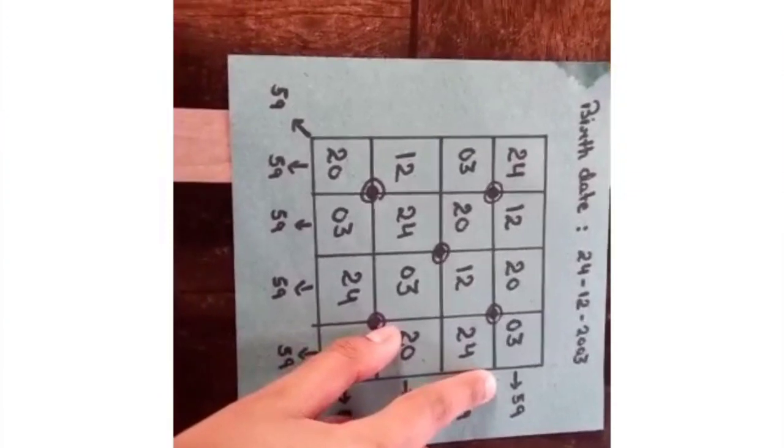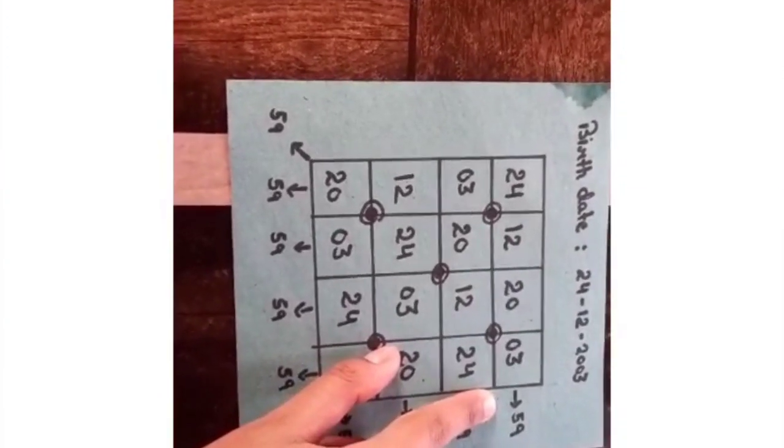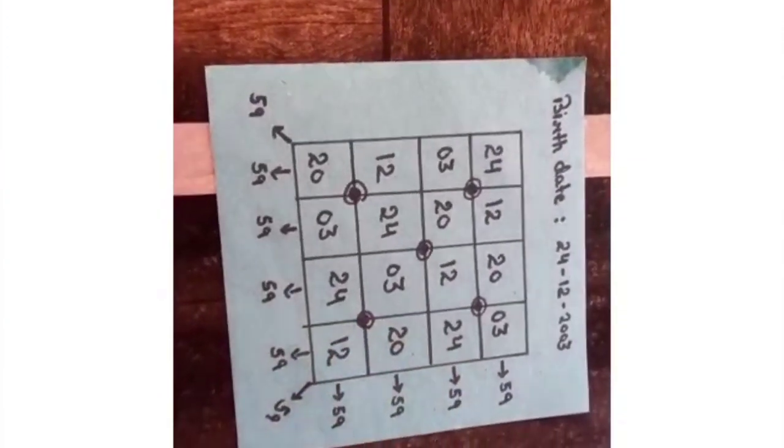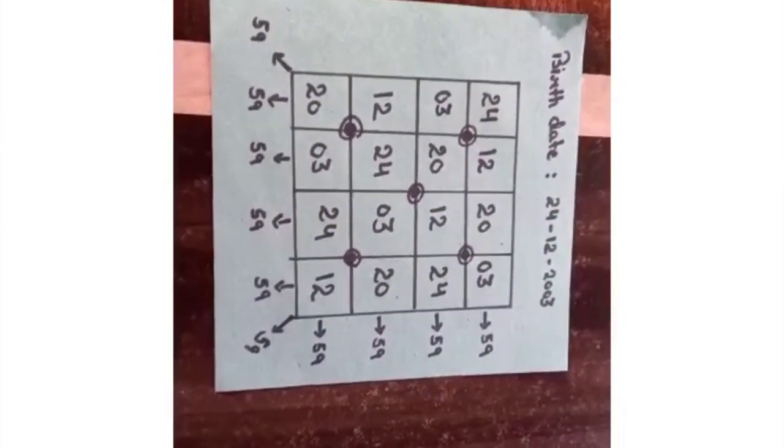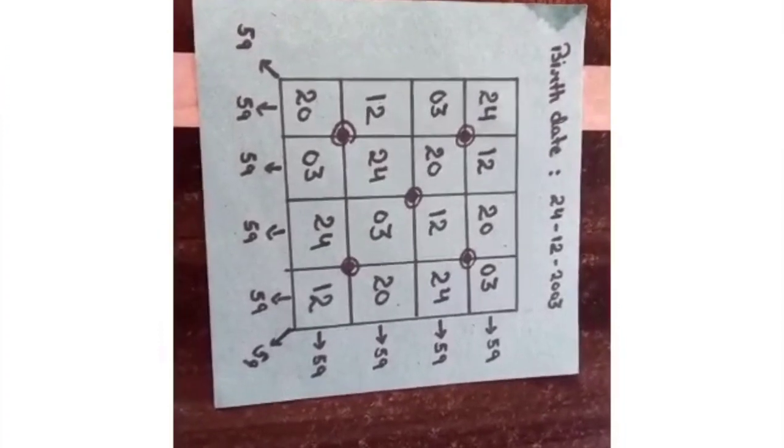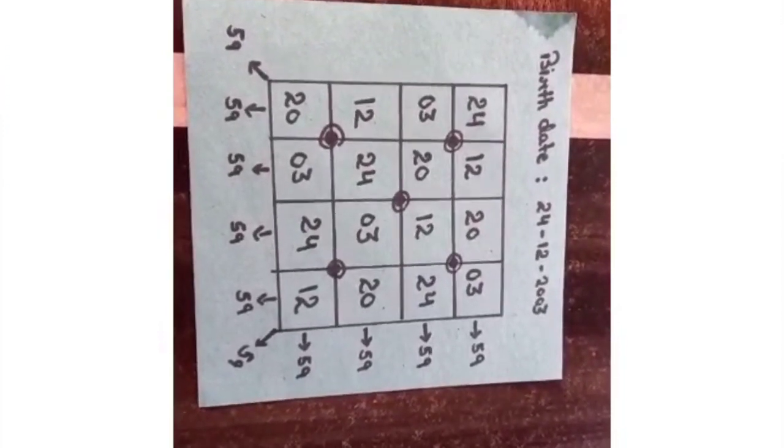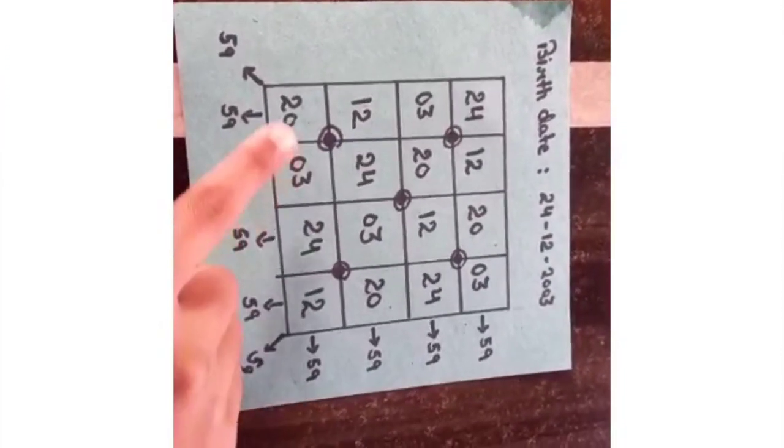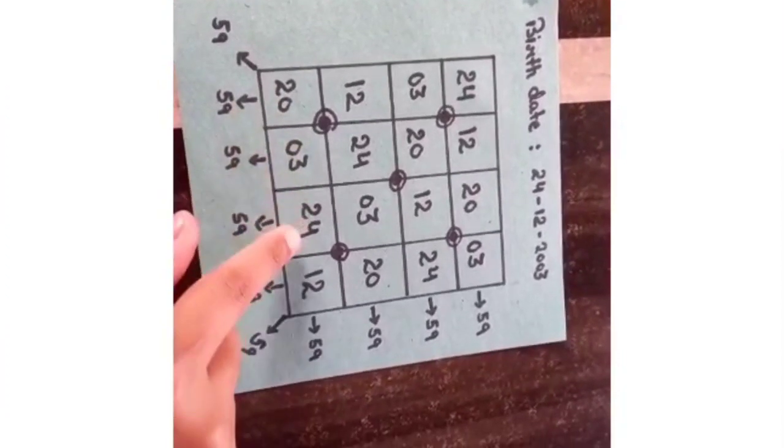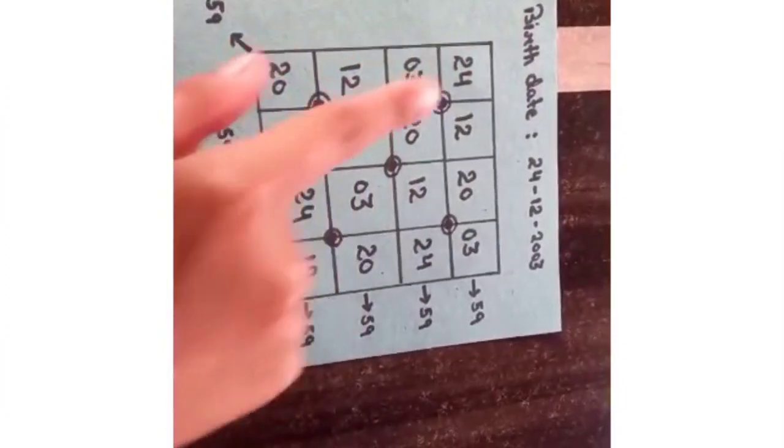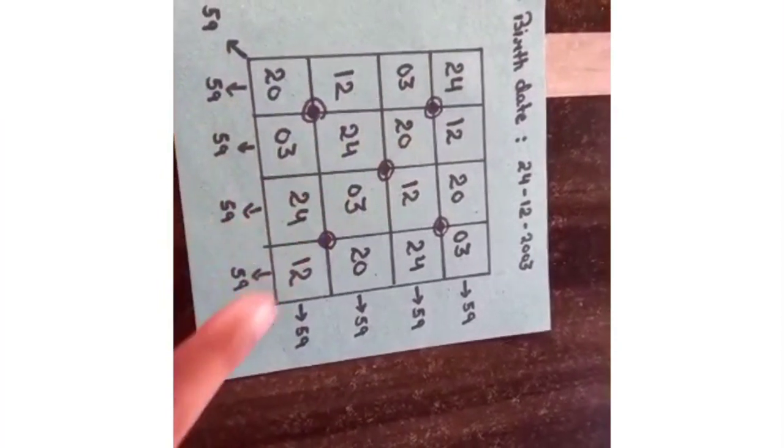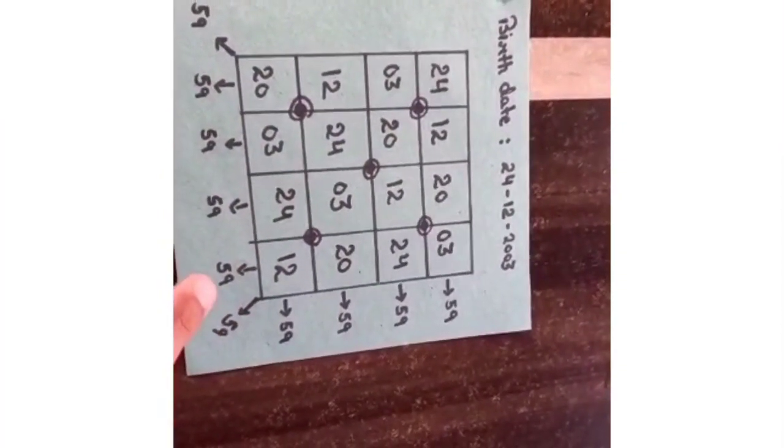Now, we have to arrange these numbers in such a way that every row and every column should sum to 59 and every diagonal as well. Can you see that 20, 0, 3, 24, 12 sums to 59? Again, 24, 20, 0, 3 and 12 also sums to 59.